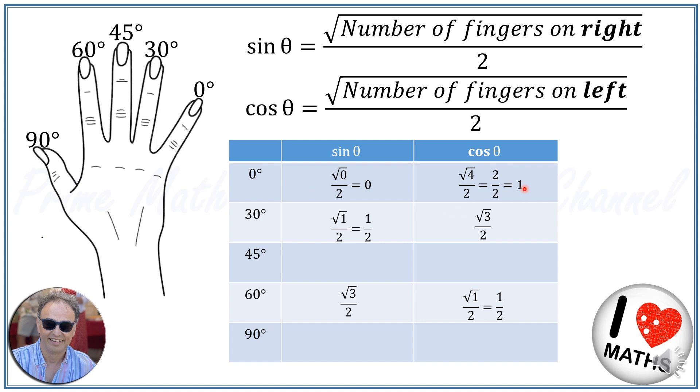What about 45? It is this finger. We have two fingers on the right and two fingers on the left, so sine of 45 degree and cosine of 45 degree are equal, and they are equal to square root of 2 over 2. Both sine and cosine of 45 degree are equal.